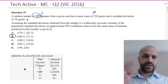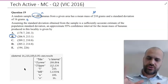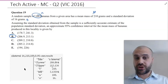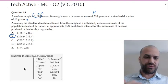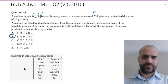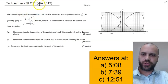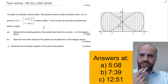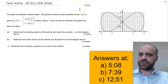So our answer here is B as well. You can do this with the formula, but I'm not going to show you that because this is something you really should be able to do on your calculator. All right — tech active, short response. We're in Western Australia, 2019. Give yourself about 10 minutes on this one.